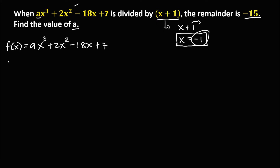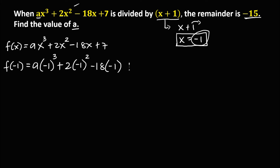Since x is negative 1, we substitute: negative 1 to the power 3 plus 2 times negative 1 to the power 2, minus 18 times negative 1, then plus 7. Since the remainder is negative 15, f of negative 1 equals negative 15. Negative 1 to the power 3 is negative 1.